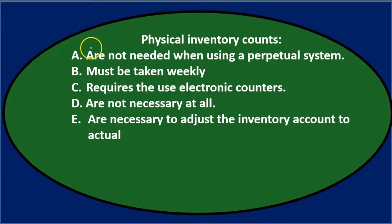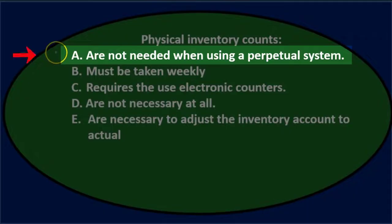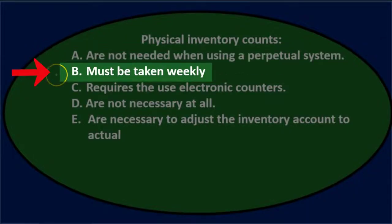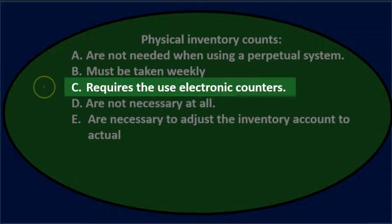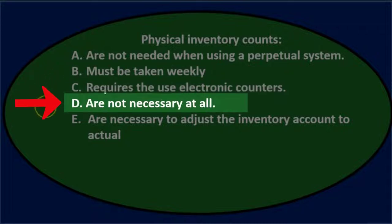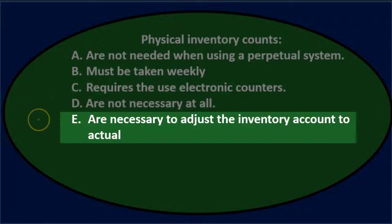First question. Physical inventory counts: A, are not needed when using a perpetual system; B, must be taken weekly; C, requires the use of electronic counters; D, are not necessary at all; E, are necessary to adjust the inventory account to actual.